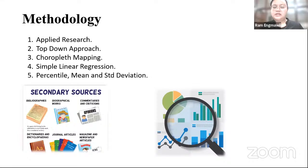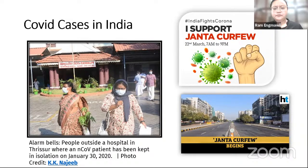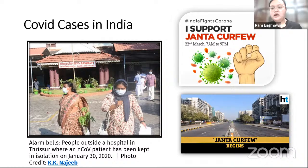We are categorizing states into the least affected and the most affected, in UTs and statewide. Regarding statistical application, we are using simple linear regression, percentile mean, and standard deviation. Coming to COVID cases in India, as mentioned earlier, the first cases of COVID-19 in India were reported on 30 January 2020. I have taken images from the Hindu newspaper published on 31st January 2020. This picture shows the first quarantine area in which three students from Kerala who were studying in Wuhan University returned to India. The World Health Organization declared the infection to be pandemic on 11 March 2020.